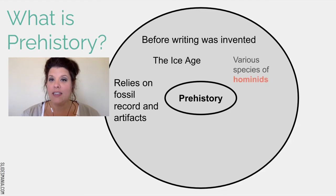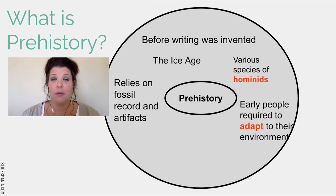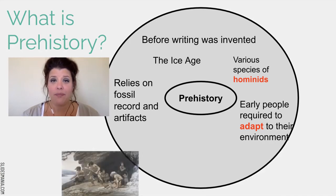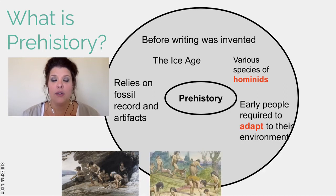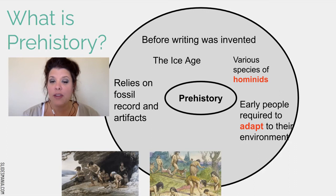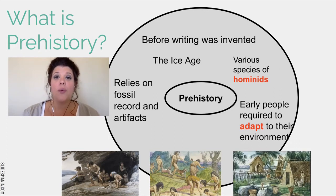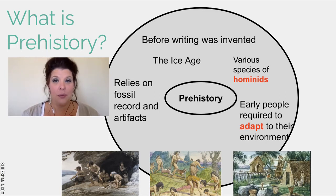This includes the Ice Age and a variety of species of hominids. Early people were required to adapt to their environment, which means we're covering early hominids who lived mostly in caves and had super basic stone tools, to hominids in a hunter-gatherer society who were able to migrate to find resources, all the way up to the earliest farming communities. This video lecture will give you the complete picture of prehistory.